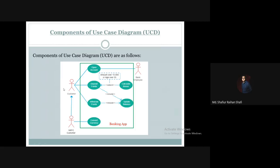The connecting lines are the communication lines, the stick figures are the actors of the system, and these ovals are the use cases of the banking app. The banking system boundary shows the overall scope of the system.